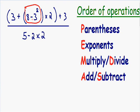Now we need to move on to our second order of operations, which is our exponents. Do we have any exponents inside of our parentheses? And we do — we have a two exponent, we have a three being squared. Three squared is the same thing as three times three, so three squared can be rewritten as nine. Three times three is equal to nine. So instead of writing eight minus three squared, we know three squared is equal to nine, so we can put a nine instead.